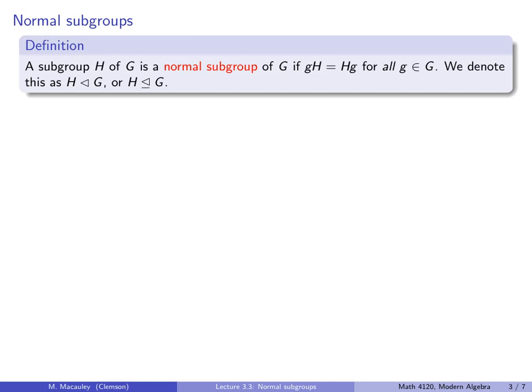Here's the main definition of the lecture. A subgroup H is normal, or a normal subgroup, if gH equals Hg for all group elements g. In other words, if every left coset is also a right coset. We denote this with this little triangle symbol, and these two symbols mean exactly the same thing. So like subgroups, this thing does not necessarily mean that H is a proper subgroup of G. These things could actually be equal.